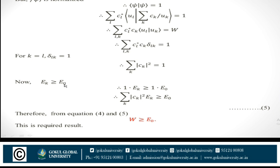Since e_k ≥ e₀, where e_k is any excited state energy and e₀ is the ground state energy, multiplying both sides by 1 = Σ|c_k|², we get Σ|c_k|² e_k ≥ e₀. Since Σ|c_k|² e_k = W from equation 4, we have W ≥ e₀, which is our required result. This shows that the lower the value of W, the closer it is to e₀. Therefore, we can minimize W by varying ψ and take the minimum value of W as an estimate for e₀.